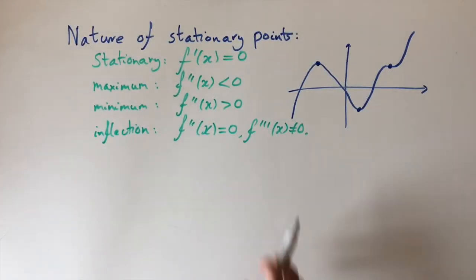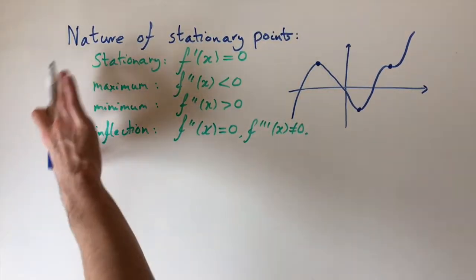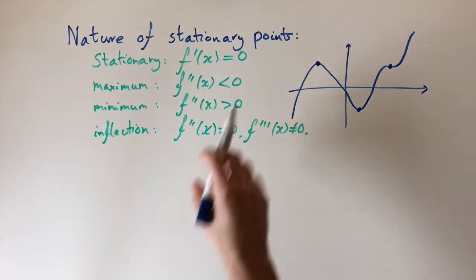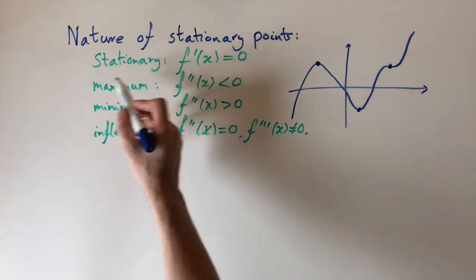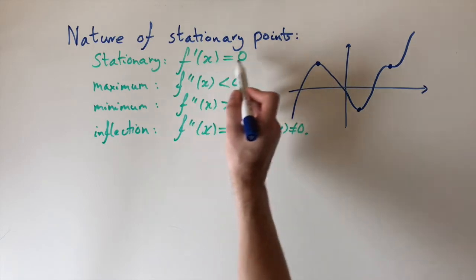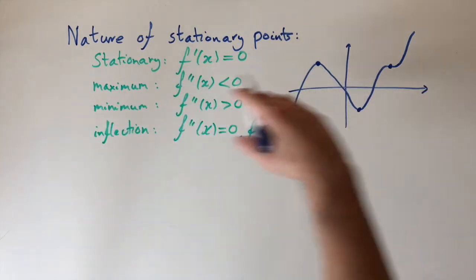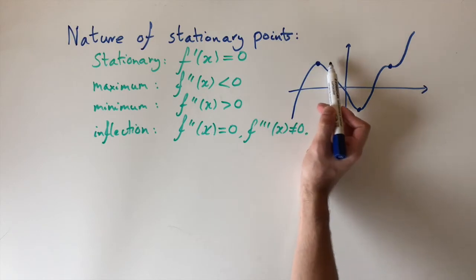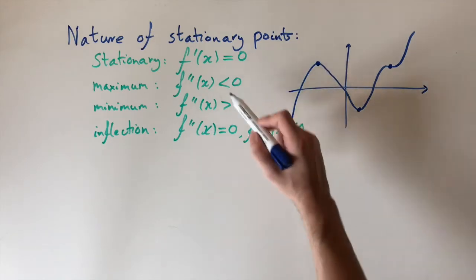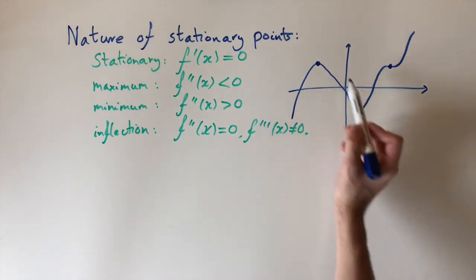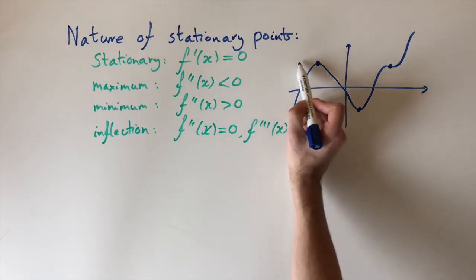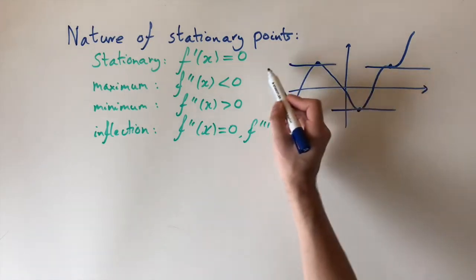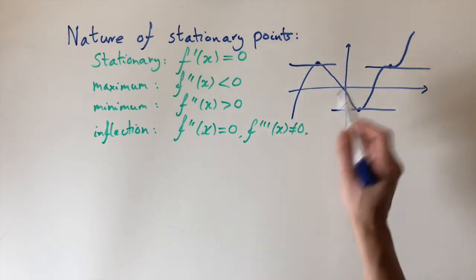This is a really nice topic. We're going to be talking about the nature of stationary points. Remember firstly what a stationary point is — that is just when the derivative of a function is zero, so when the gradient of the tangent is zero. It's the point where the function visibly turns. Here we've got a turning point, here we've got a turning point, and here we've got a turning point because the derivative is zero at these points.